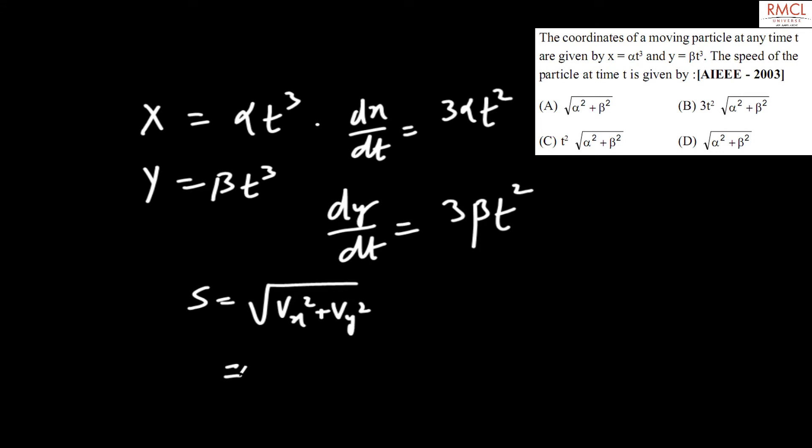it comes out to be 3t square is common, so 3t square times root over alpha square plus beta square. So the option will be option number B.